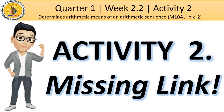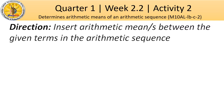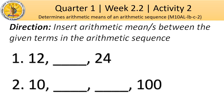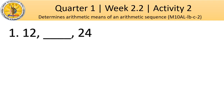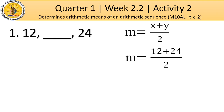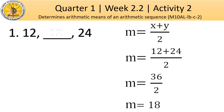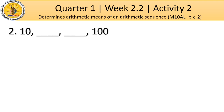Let's do Activity 2: Missing link. Direction: insert arithmetic means between the given terms in the arithmetic sequence. In number 1, it only has three terms, so we can just add the first and the last term and divide by 2 to get the arithmetic mean. Substituting 12 and 24 for x and y: 12 plus 24 divided by 2 gives 18. So 18 is the arithmetic mean. Number 2 has more than three terms, so let's use the formula for finding the n-th term of an arithmetic sequence to find the common difference.